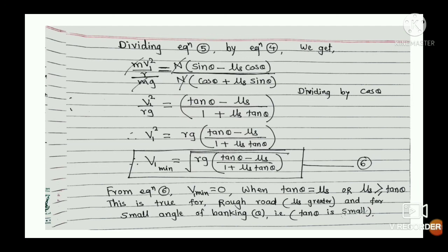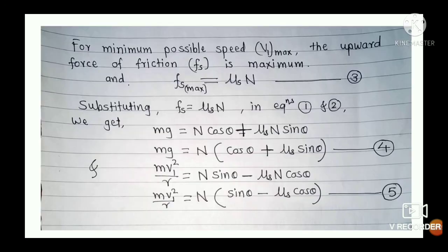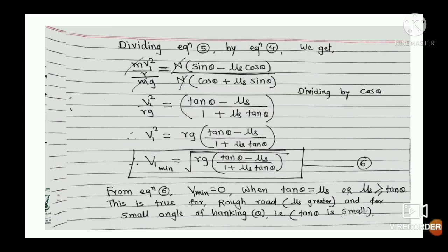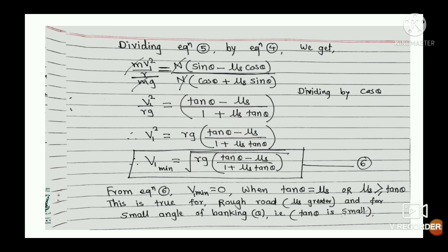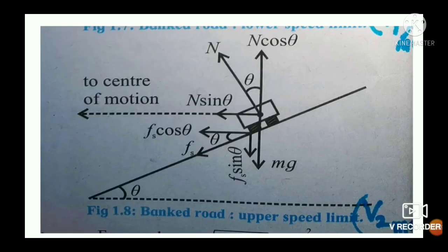From Equation 6, V(min) = 0 when tan θ − μs = 0, that is when tan θ = μs. So V(min) = 0 when tan θ = μs, or when μs ≥ tan θ. This means that if the coefficient of static friction is greater than or equal to tan θ, the vehicle can remain stationary on the banked road without sliding.